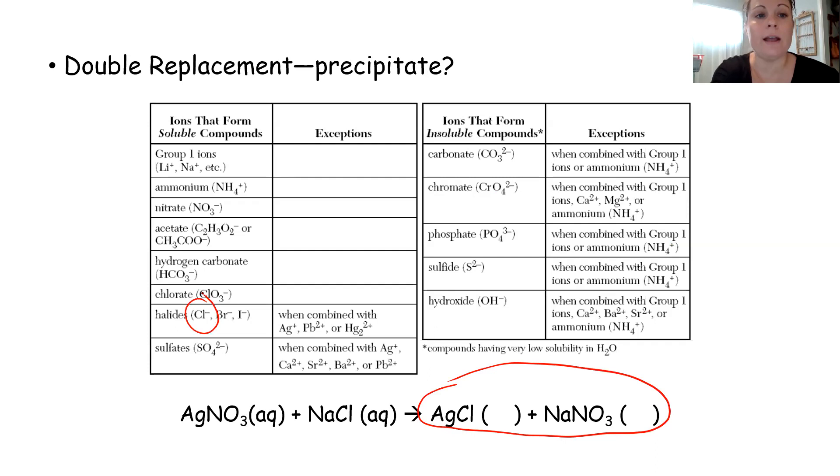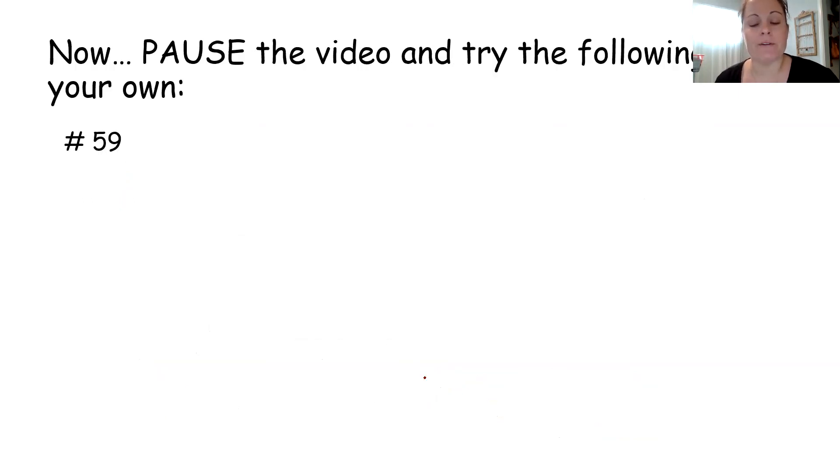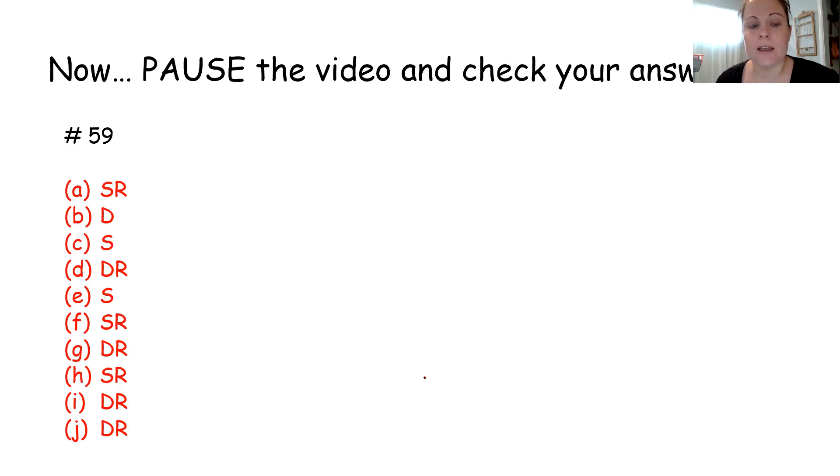Cl is a halide. I don't see silver anywhere on this list or this list. So I know that anything that has Cl minus ions in it is going to be aqueous, except when it combines with Ag. And in this case, this is an exception, which means that this is an insoluble compound. NaNO3, Na is a group one ion. Nitrate is also on our list as a soluble or aqueous compound. And there are no exceptions to that rule. So this will be an aqueous. So I know that a double replacement will occur between these two reactants because one of them forms a precipitate. Pause the video and try number 59, identifying what type of reaction all of those are. Pause the video and check your answers.